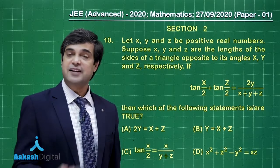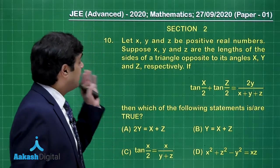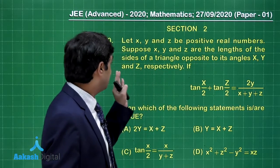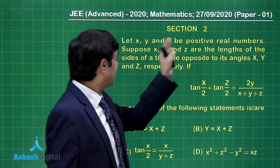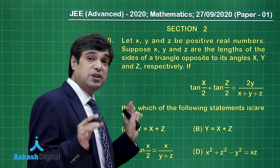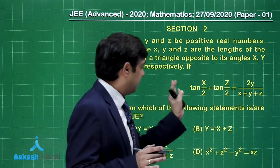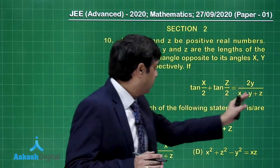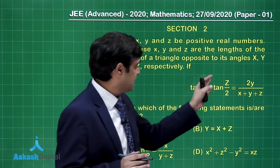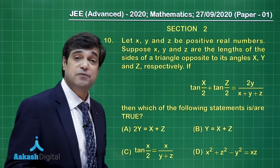Moving forward, let us take up question number 10. Let x, y, and z be positive real numbers. Suppose x, y, z are the lengths of sides of a triangle opposite to the angles X, Y, Z respectively. One more constraint is given: tan(X/2) + tan(Z/2) = 2y divided by x plus y plus z.